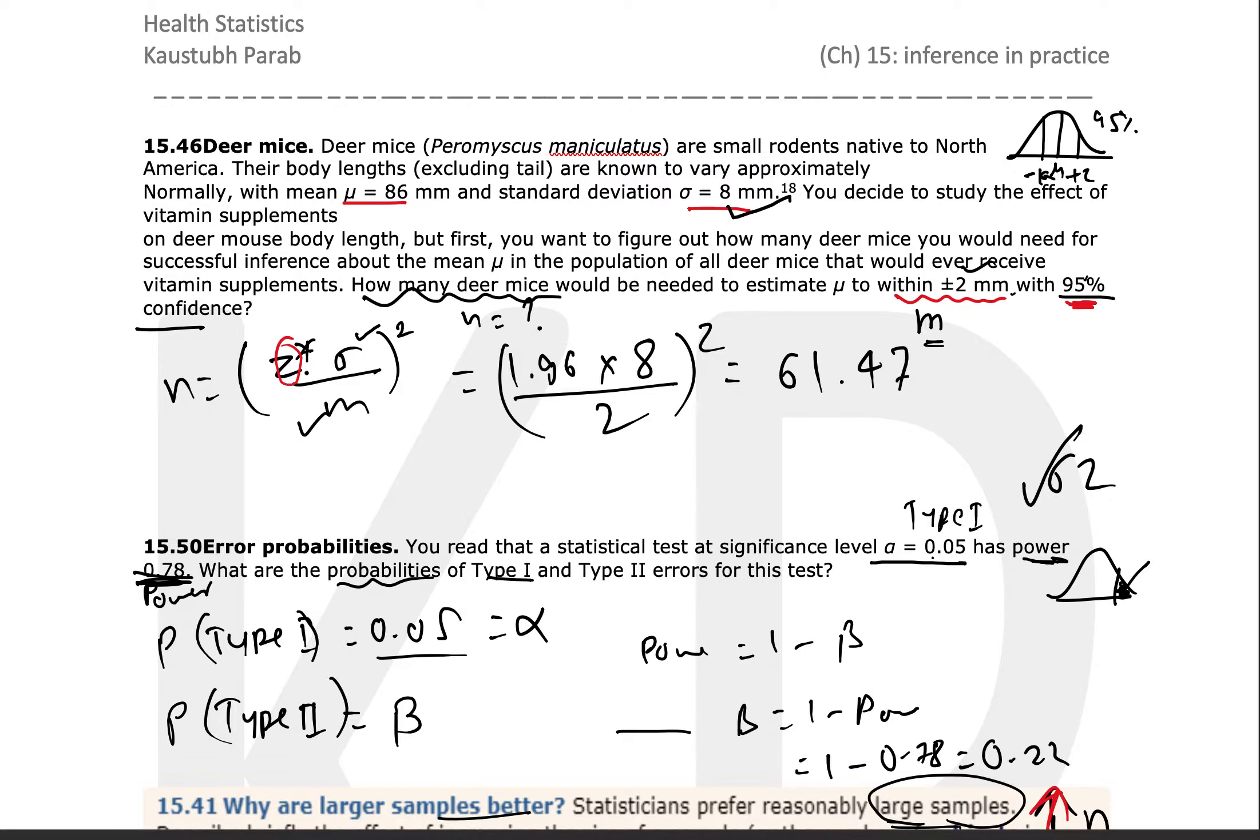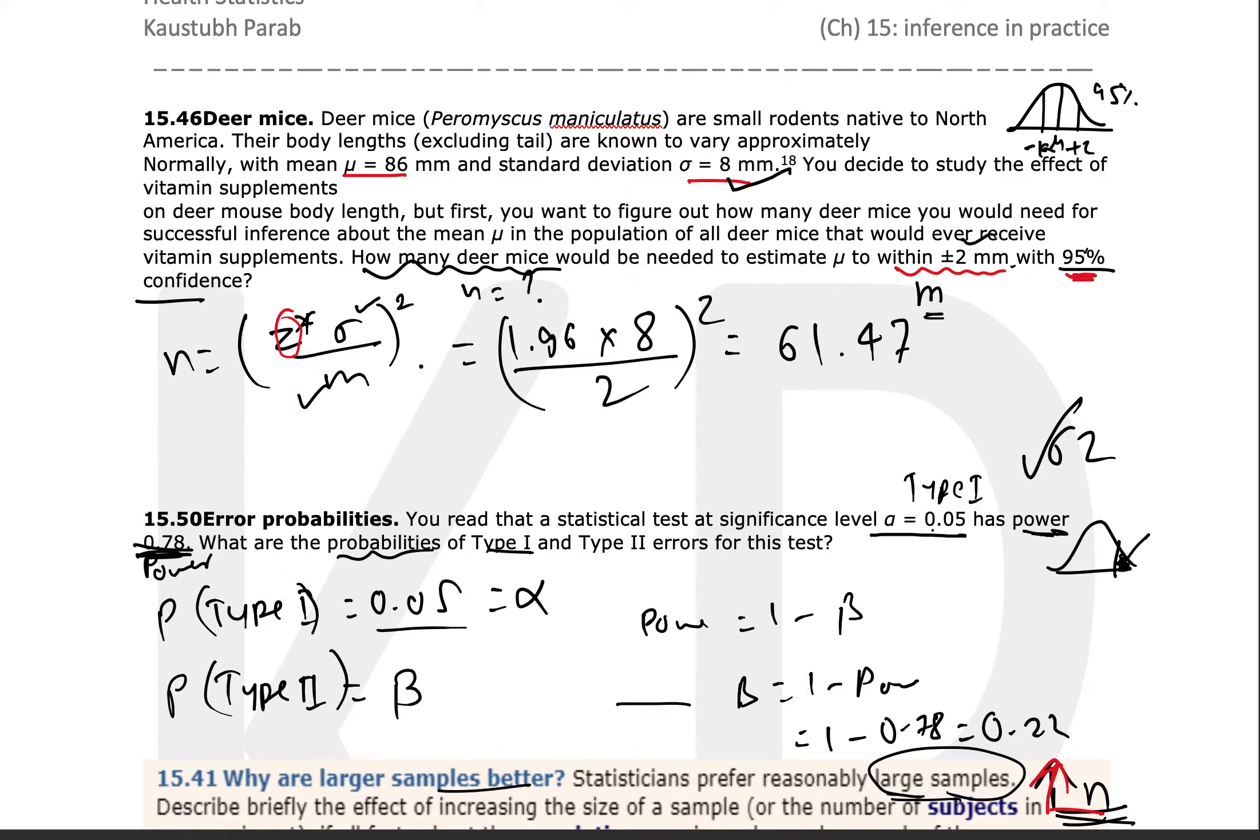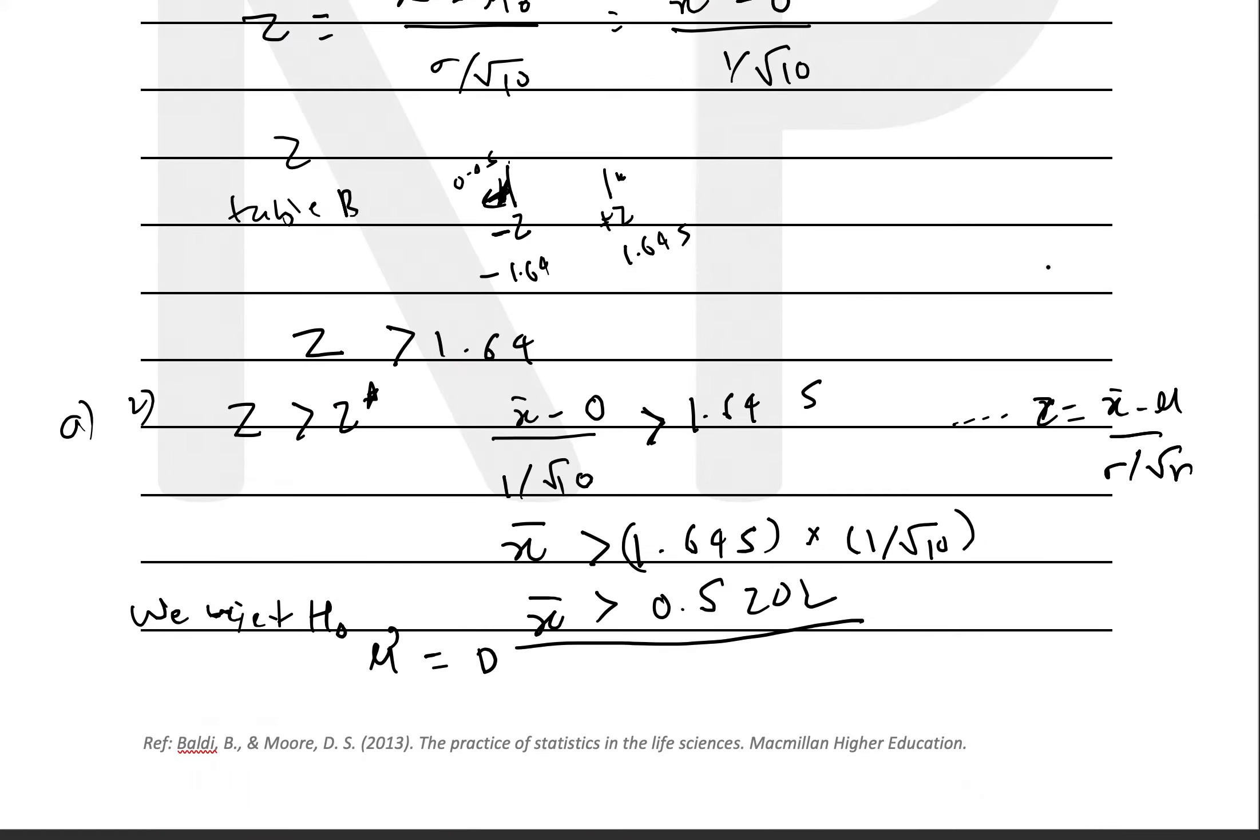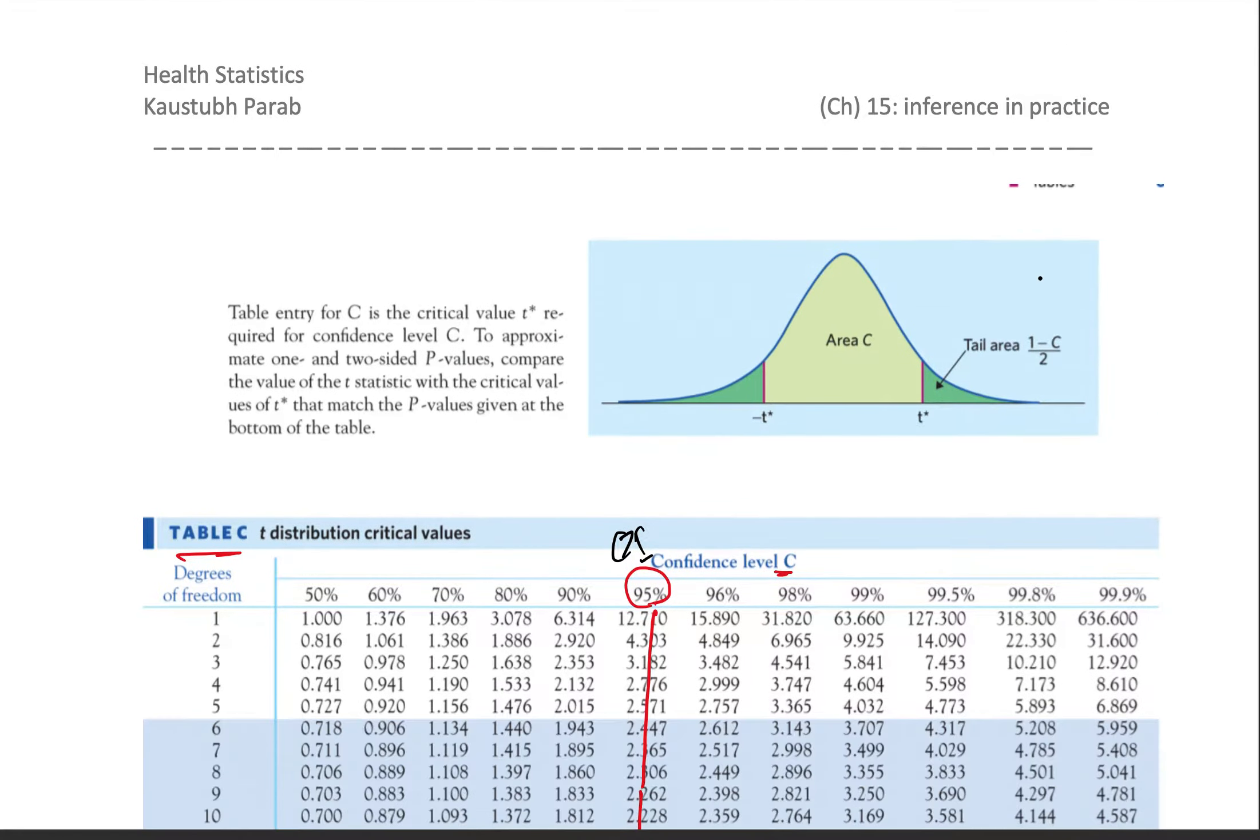We can consider the Z value for 95% confidence interval using the table. So if you look at Table C, 95% confidence interval—this is Table C—and go all the way till you hit the row indicating the Z star values, that's the critical Z value.